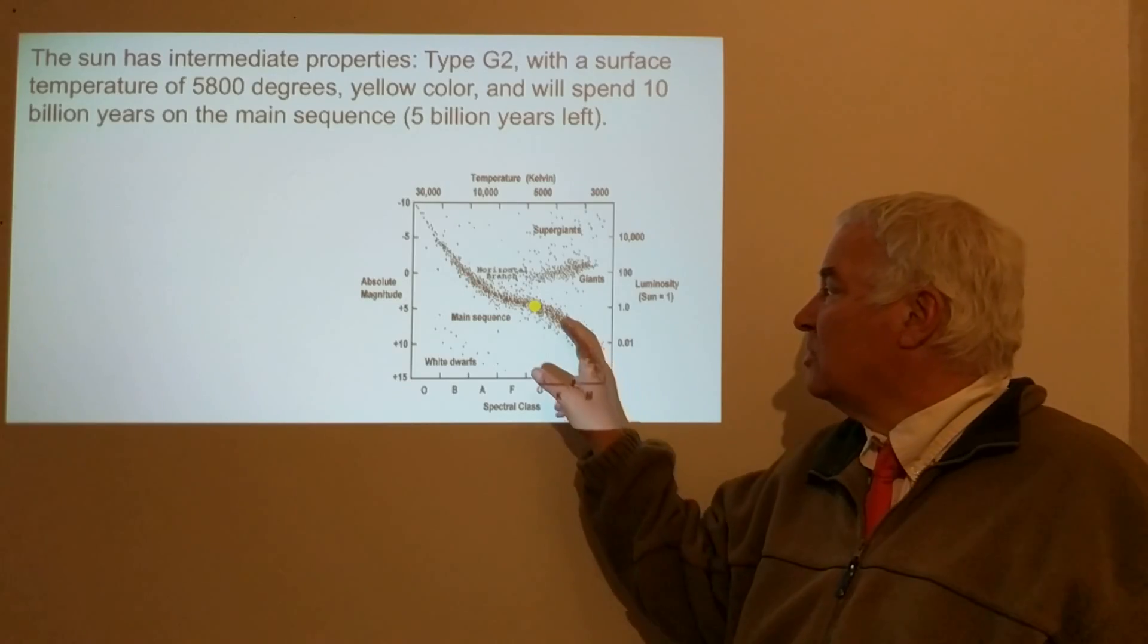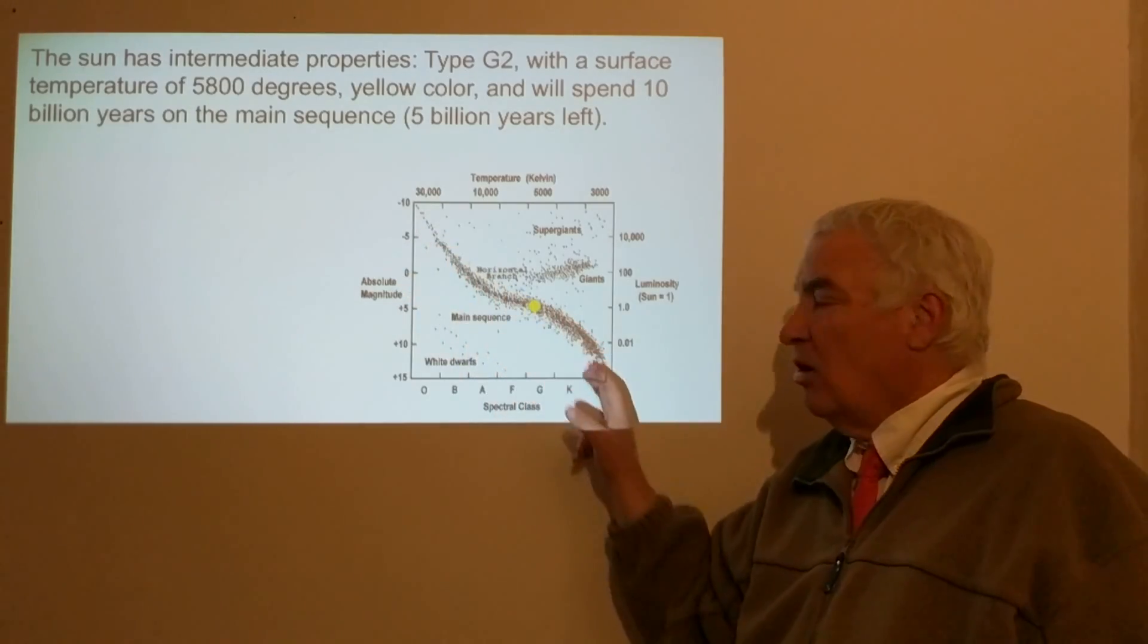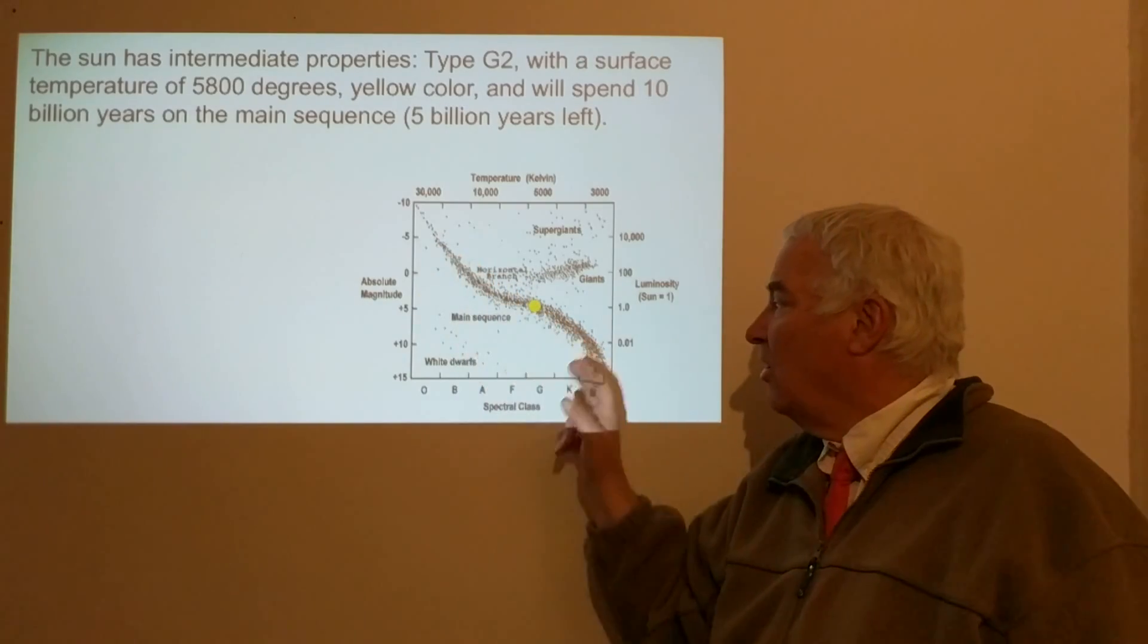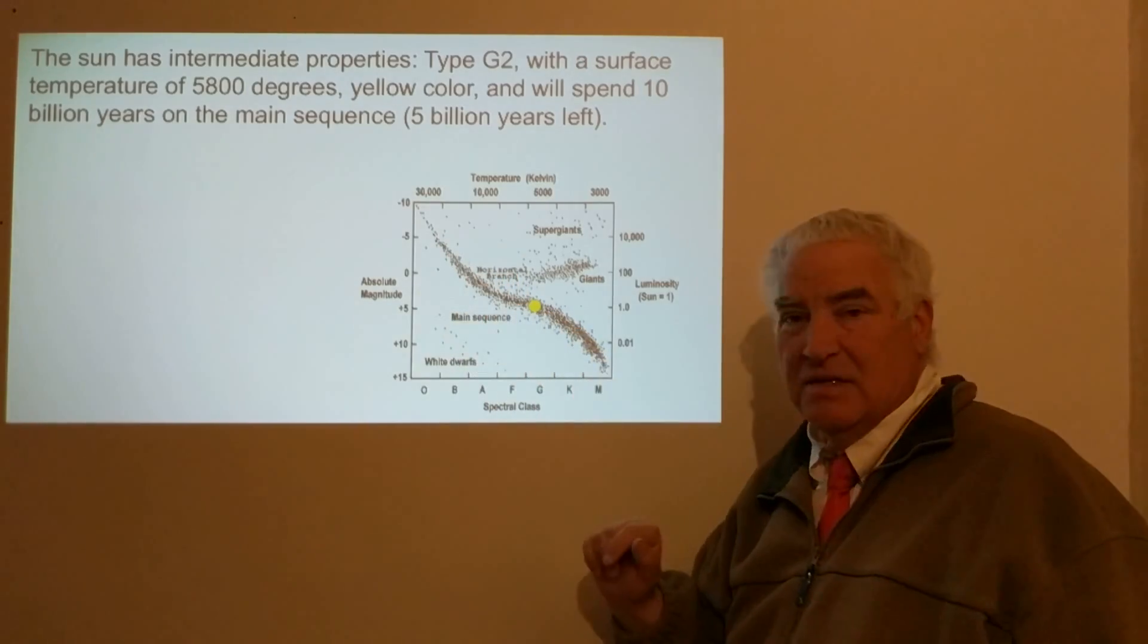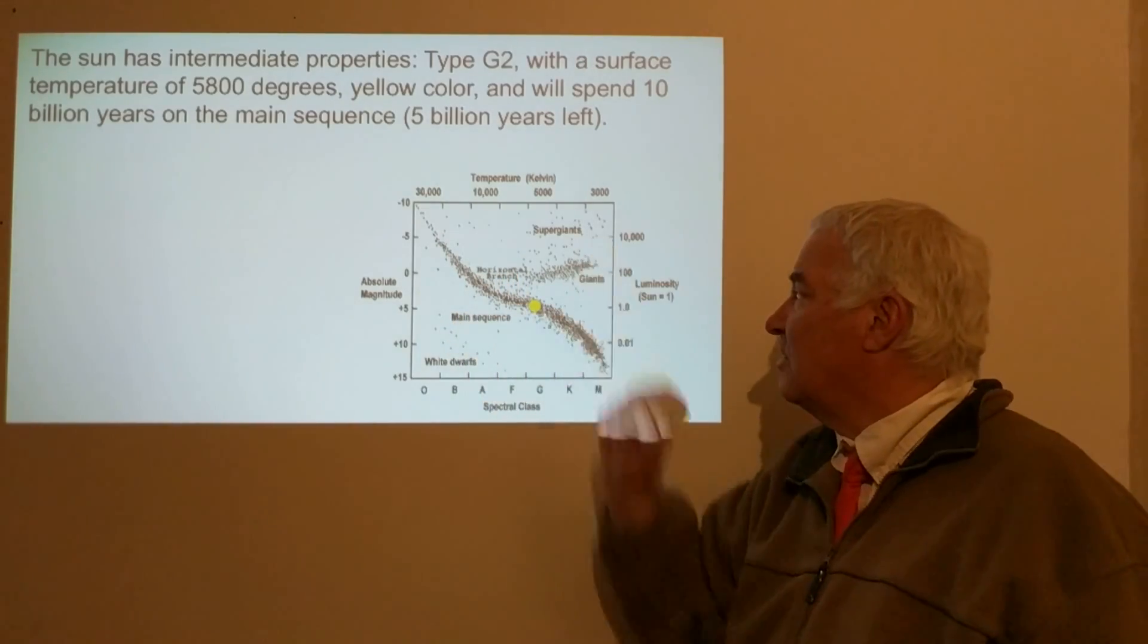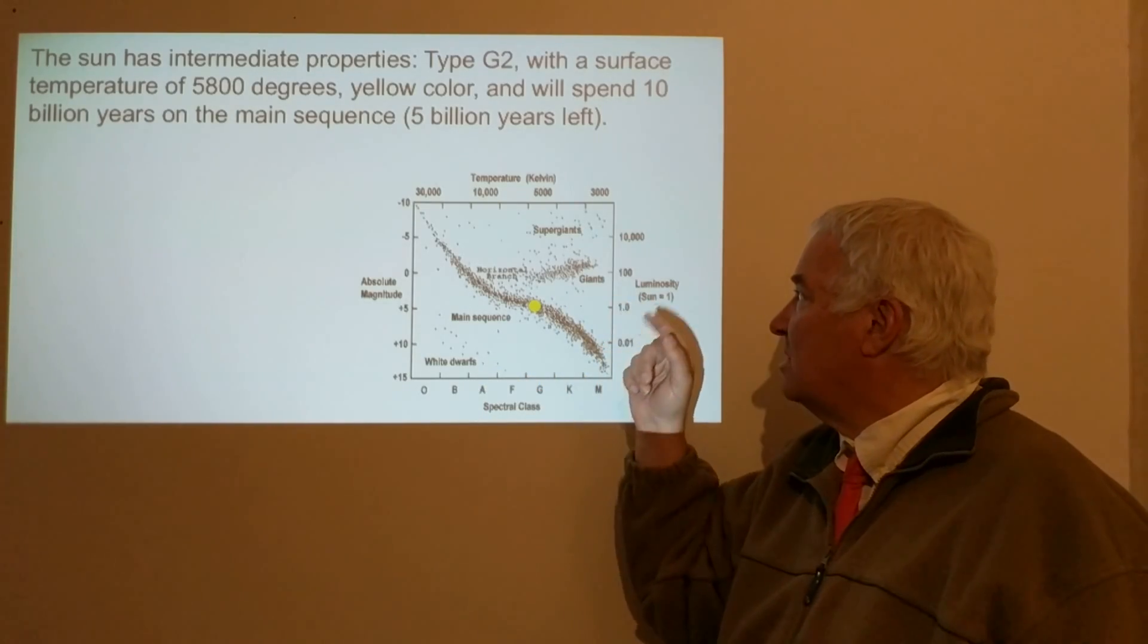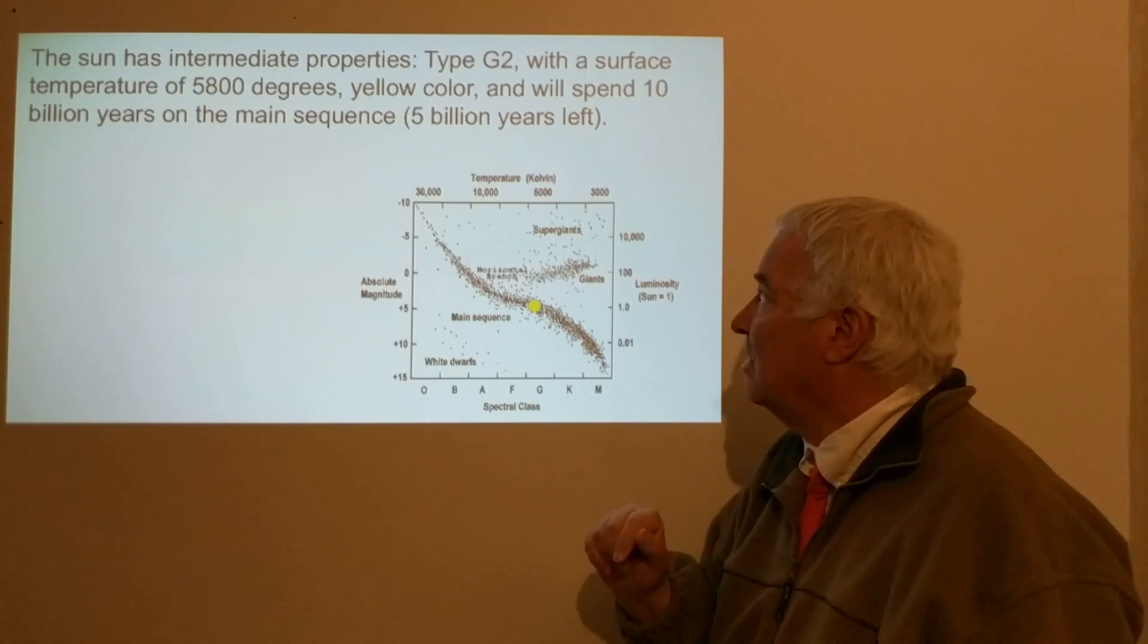All of the stars on the main sequence here are converting hydrogen into helium, and 90 percent of all stars are on the main sequence. 10 percent make up these other groups, including the white dwarfs, the giants, and the supergiants.